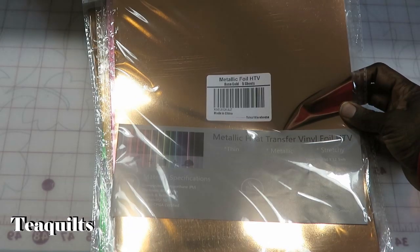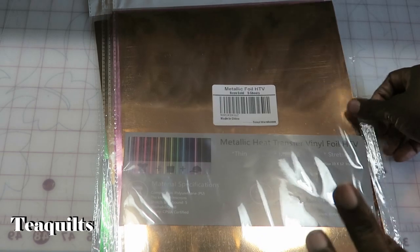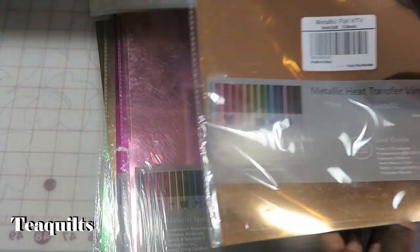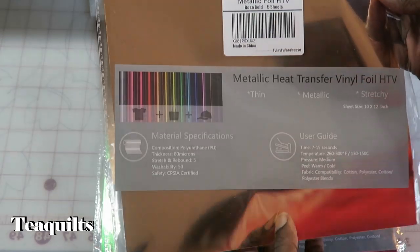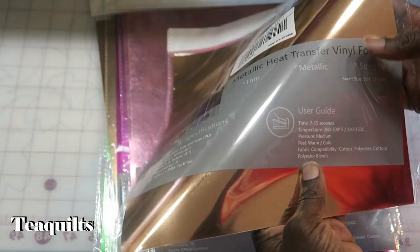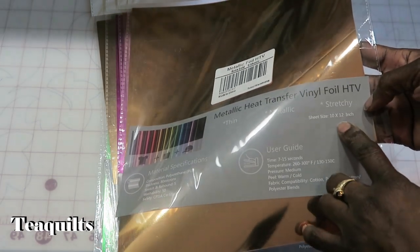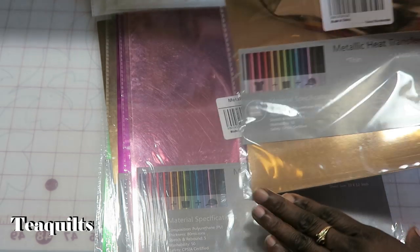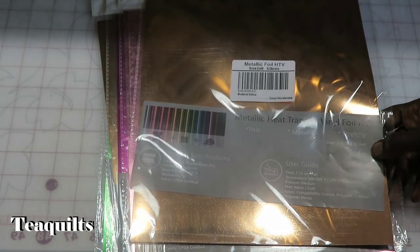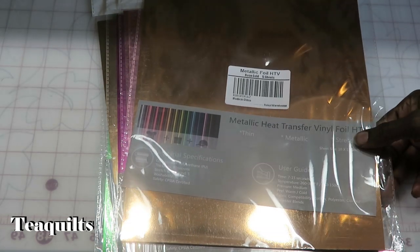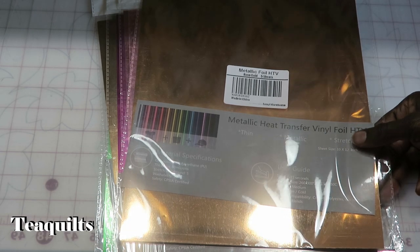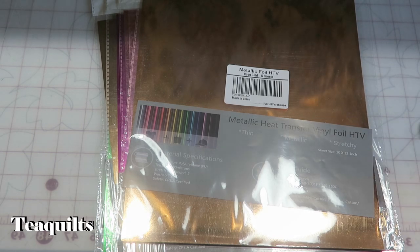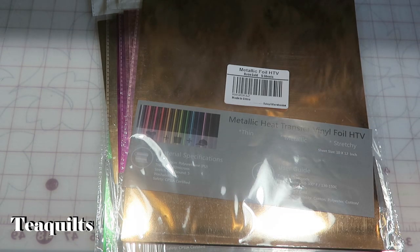First up I've got some metallic foil HTV which is heat transfer vinyl and I got it in a few colors. Each of these packages have five sheets in it and it is the stretchy vinyl, so you need to be careful if you don't want to buy stretchy. Stretchy vinyl can basically work on anything that regular vinyl can, except that if you're putting it on something like leggings then when it stretches out it won't break your vinyl.